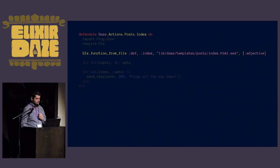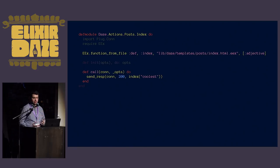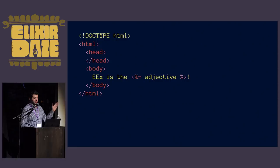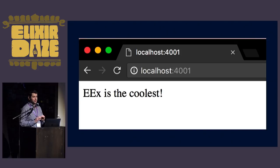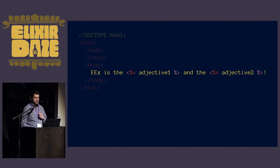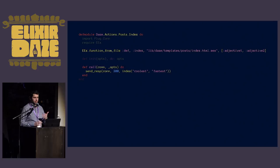If we want to pass more arguments - say two adjectives - then we have to update the template, the compilation call, and where we call it. It's not ideal, and these are positional arguments so you can mix them up, which can lead to weird bugs.